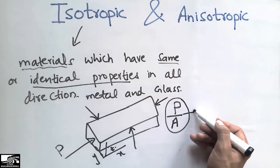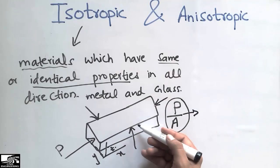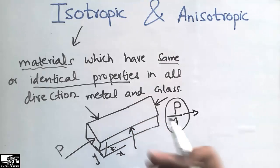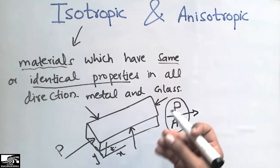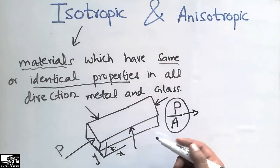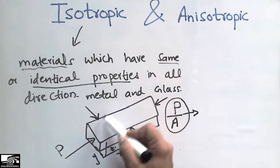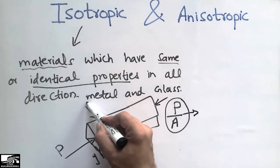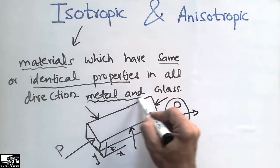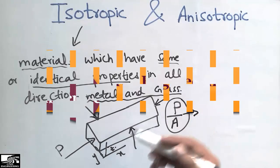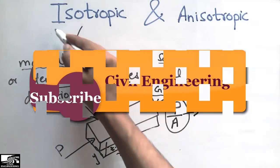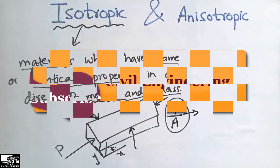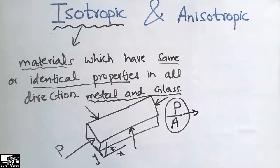The strength, stress, Young's modulus, hardness of the material, and strain are all the same in all directions. Examples of isotropic materials include metals and glass. Now moving on to anisotropic material.